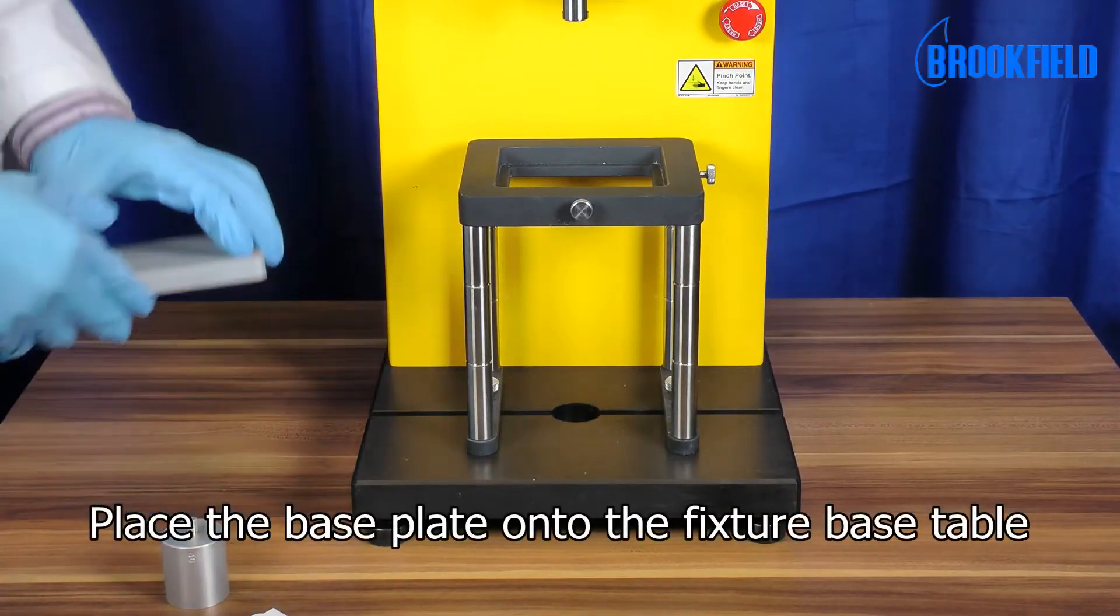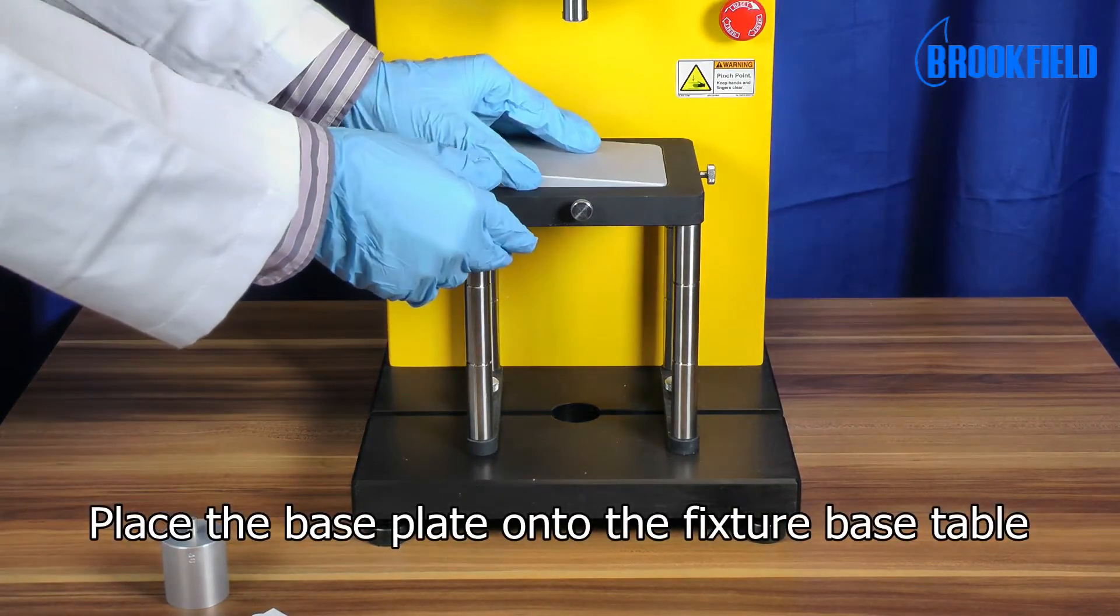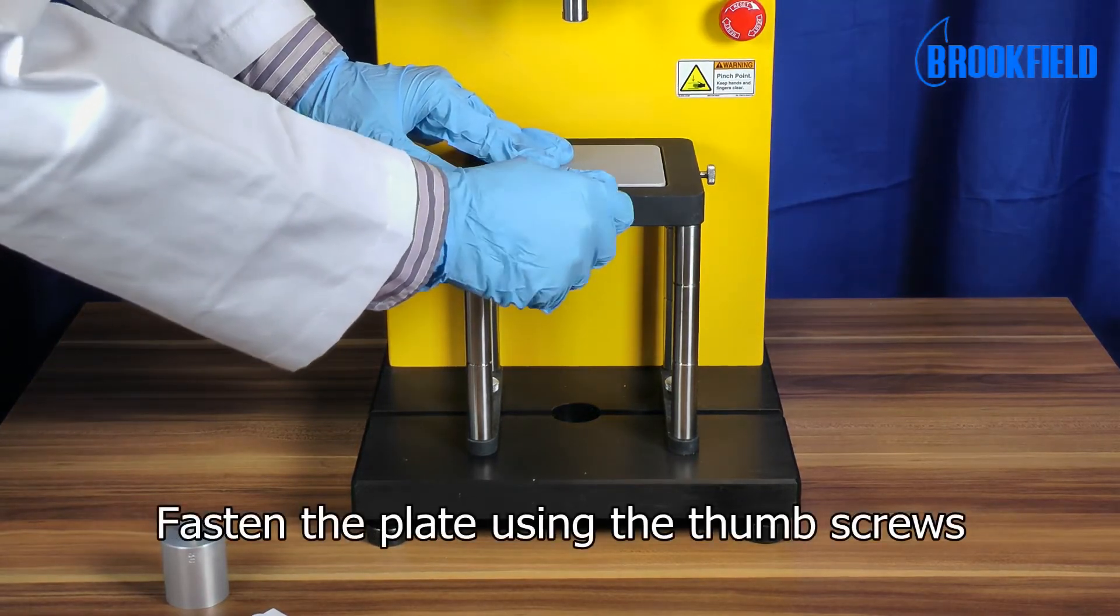To set up the test, place the base plate onto the fixture base table and tighten into position using the thumb screws.